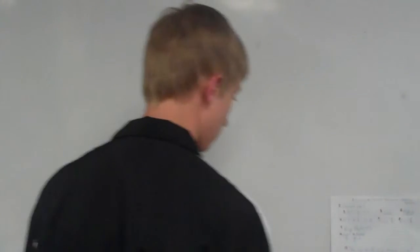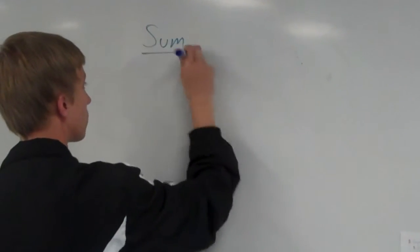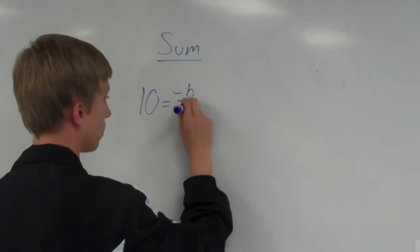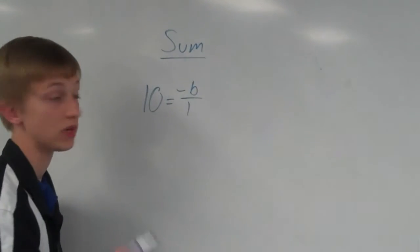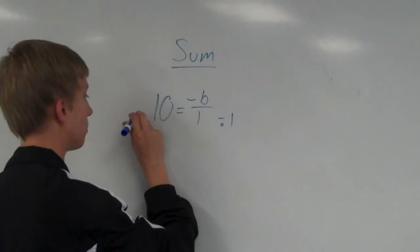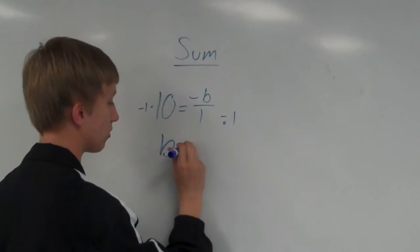Say you start with the sum, 10 equals negative b over 1. Now, I'd have to set b equal to 10, which means I'd have to multiply each side by negative 1. And then I get b equals 10.